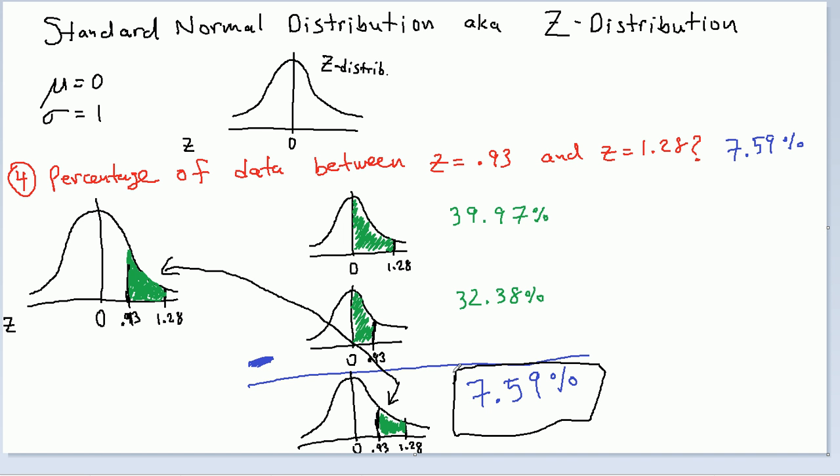And that equals 0.0759. So, that's how you get the area between two values that don't include zero. These are slightly more complicated. So, I tried to show you with a picture as well as with numbers. So, I hope this was helpful. This is question four. Continue on to five, six, and beyond.